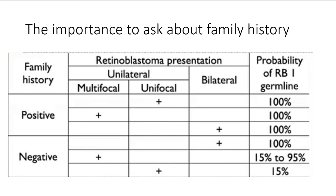It is important to ask about family history, as this is an autosomal dominant disease. With a positive family history with multifocal, unifocal, bilateral, or trilateral disease, the penetrance — the ability to transmit the disease to offspring — is 100%. However, this declines significantly if there is a negative family history with unifocality, where the ability to transmit the disease is only 5% to 15%.